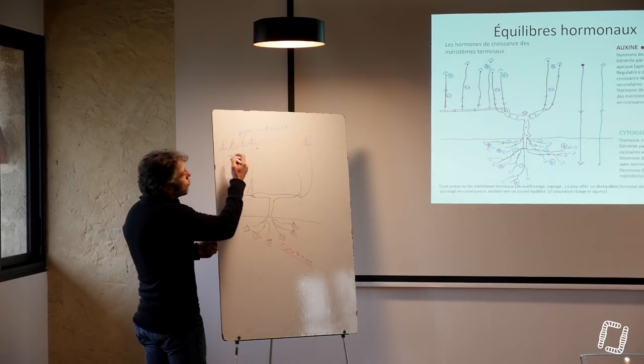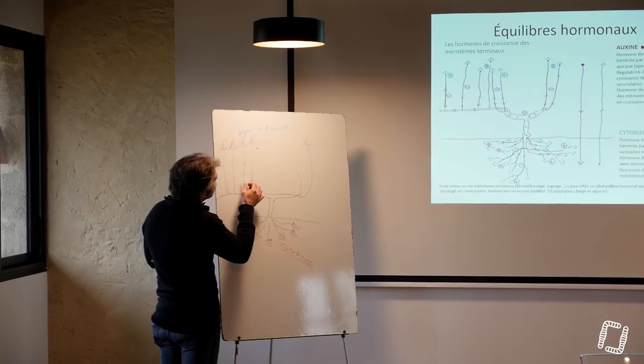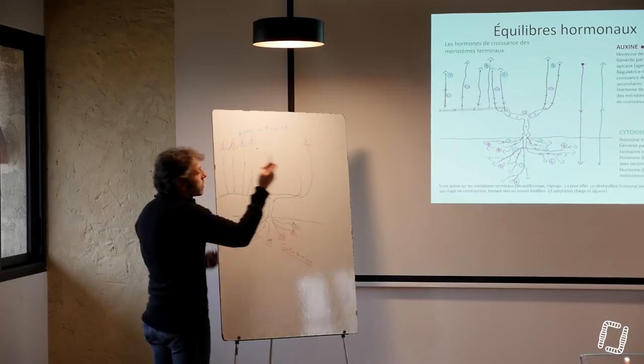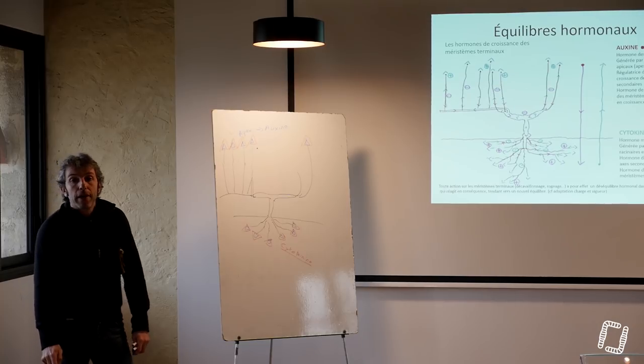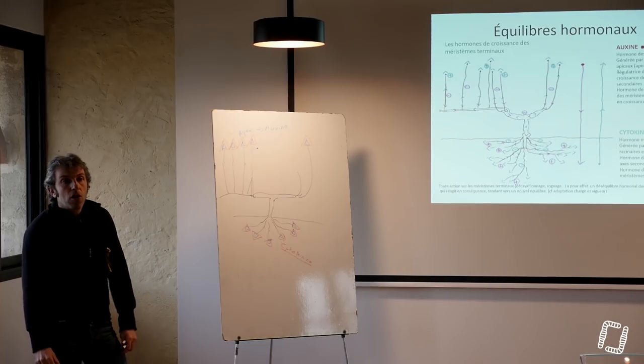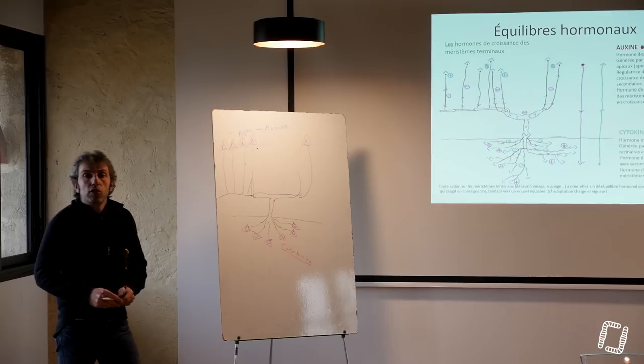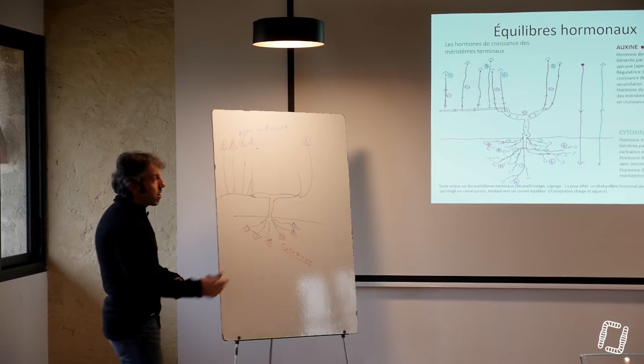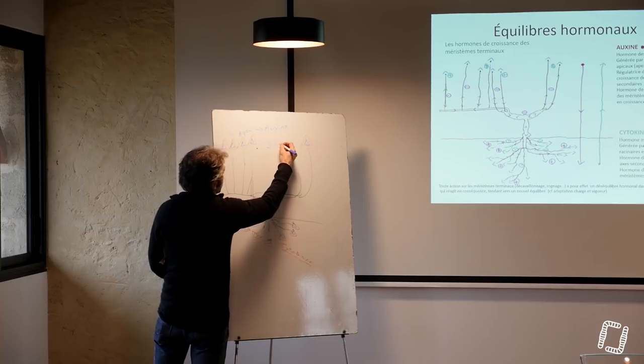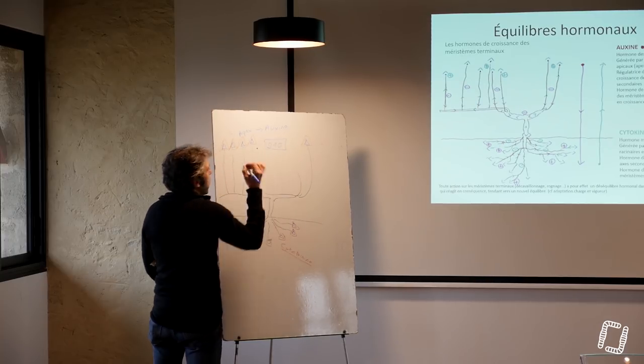Et puis, si on compte le nombre de bourgeons, je ne sais pas, moi, si on a un, deux, trois, quatre, cinq, six, sept sarments, on avait laissé sept sarments, on a à peu près 30 bourgeons par sarment, trois fois sept, 21, 210 bourgeons francs. D'accord? Vous êtes d'accord? 210 bourgeons francs. On a un potentiel de 210 bourgeons francs.